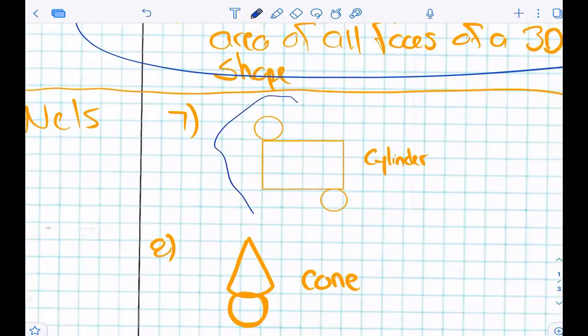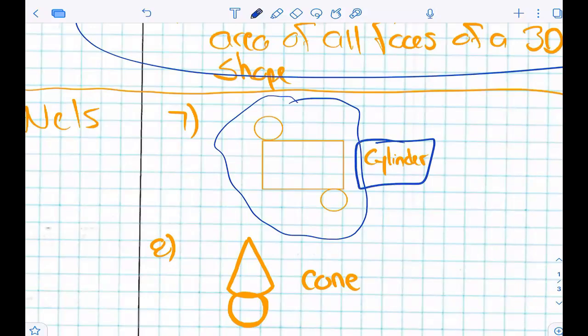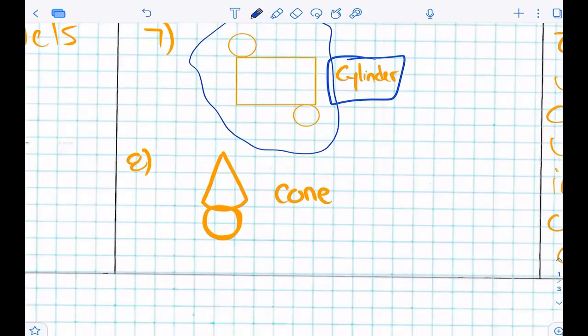Is this a net right here? Yes. If that's a net, it's flat. If I folded this to make it 3D, it would turn into a cylinder. Think of the coffee cup. If I folded this triangle and circle into a 3D shape, it would make a cone.